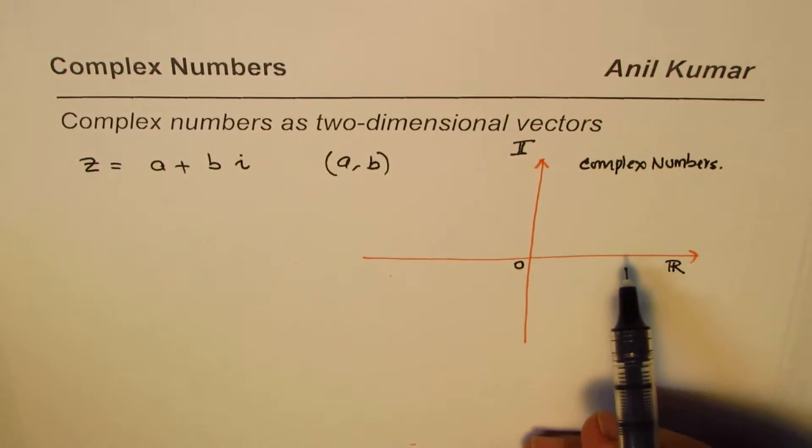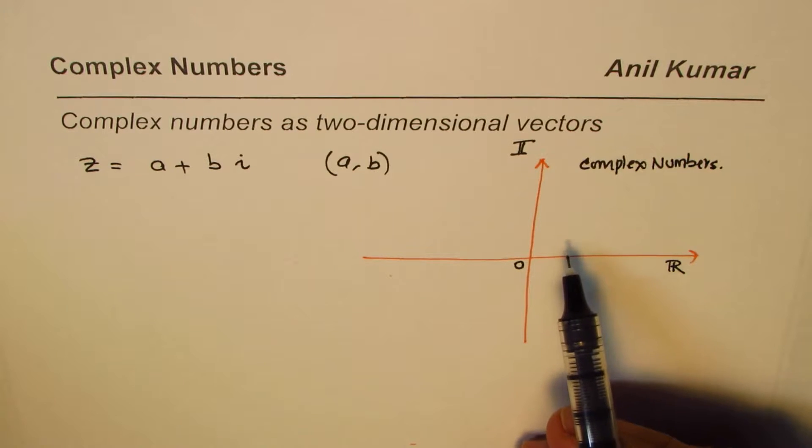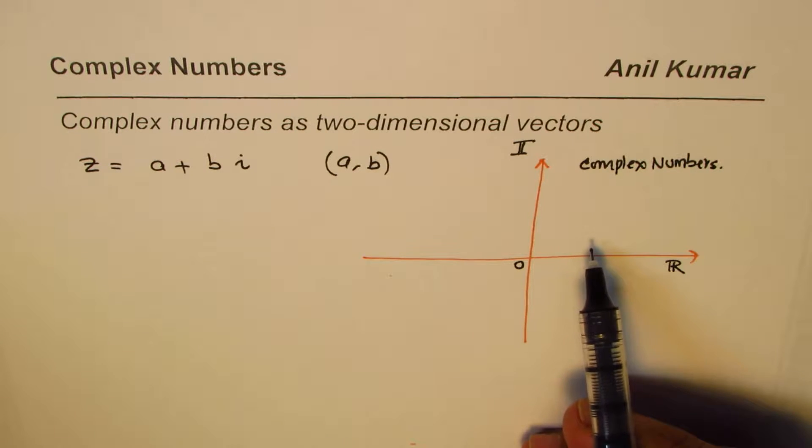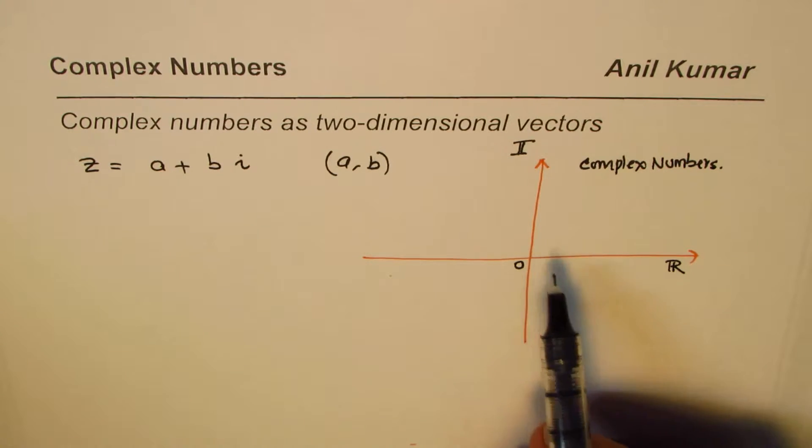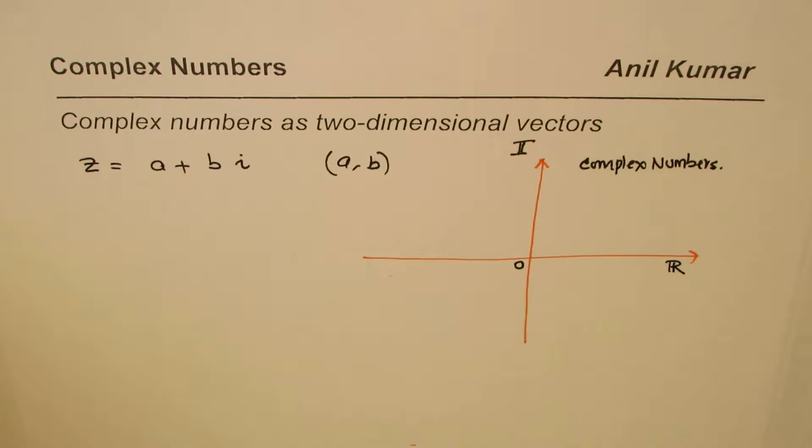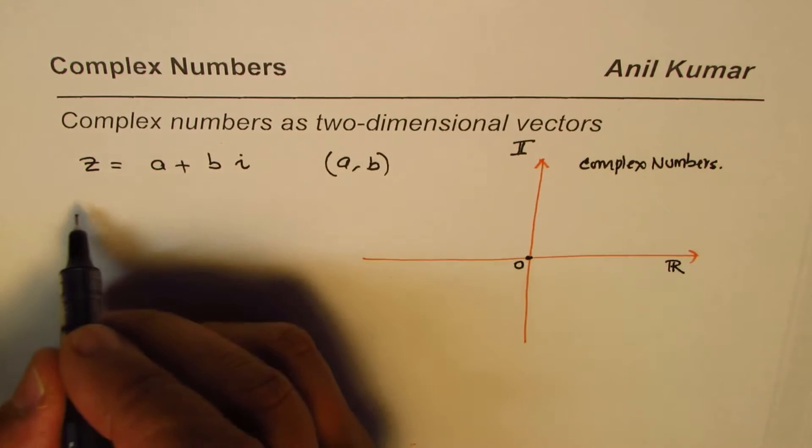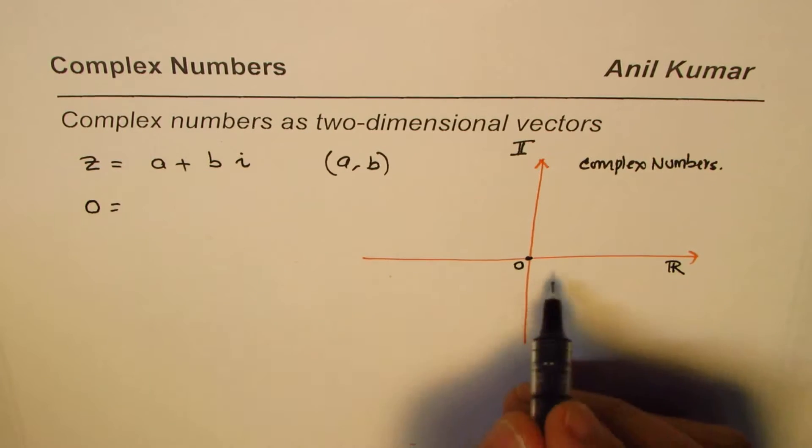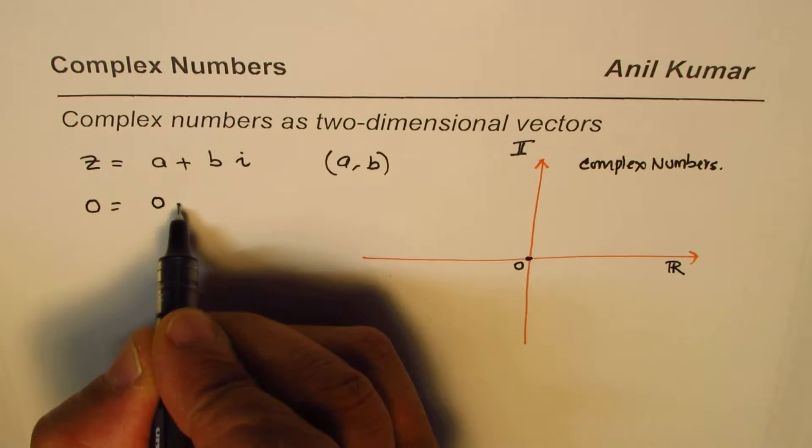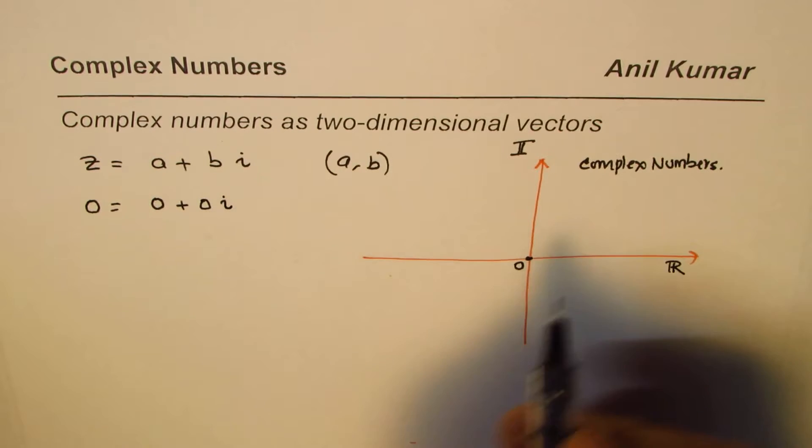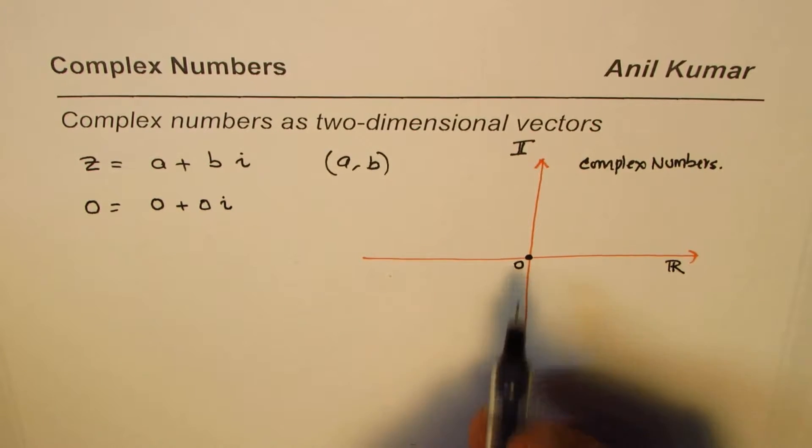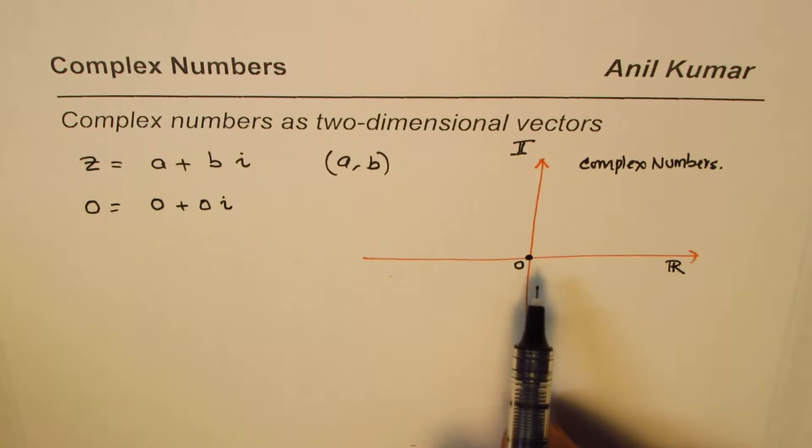And when we represent a number here, it could be treated as a vector. So some of you who are doing vectors, for them this term will be familiar. So we'll represent them as a vector. Now here the origin is zero, zero. That zero, the origin here, zero will be represented as real part is zero, imaginary is also zero. So that is our origin for the plane.